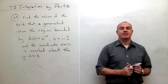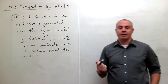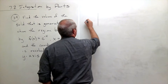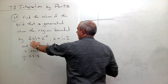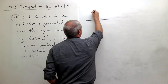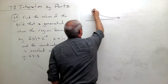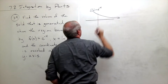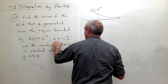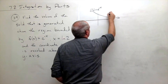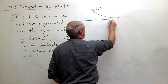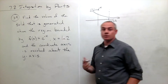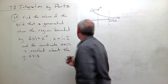First, let's get a feel for what we're doing by drawing a picture of our region. We have f(x) = e^(-x), and we have x = ln(2), which is some vertical line. Then we have the two axes — the x-axis and the y-axis.